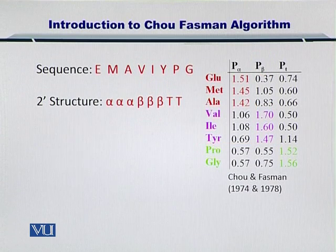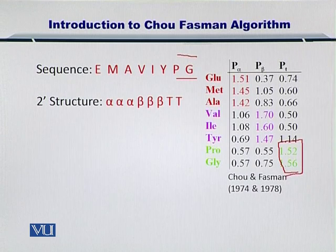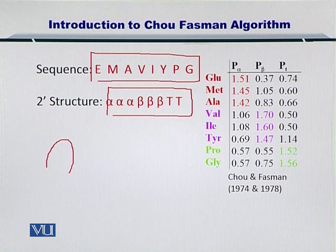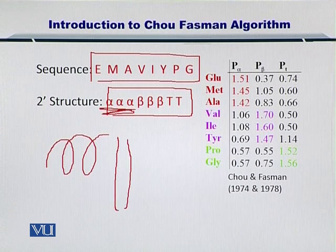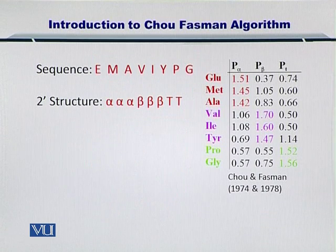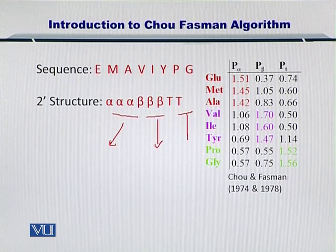Next, if you look at proline and glycine residues — two of them here — you can see that they form turns, and therefore we have assigned turns to these two. This is the secondary structure of a protein having the sequence given here. So first you have an alpha helix, then you have some beta sheet, and then there is a turn. Then you have a beta sheet followed by a turn. If this protein was to be drawn, you would see three amino acids as part of an alpha helix, three amino acids as part of a beta sheet, and two amino acids as part of a turn.